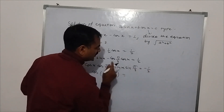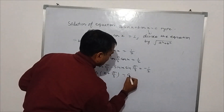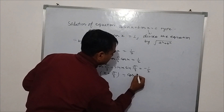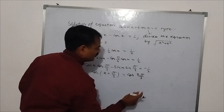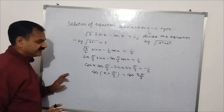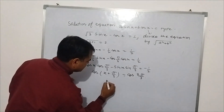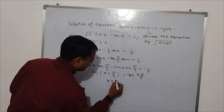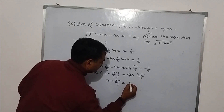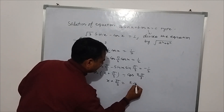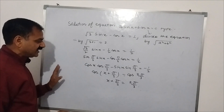So cos(x + π/3) equal to minus 1/2. Now, minus 1/2 is the value of cos(2π/3). So we have cos(x + π/3) equal to cos(2π/3).